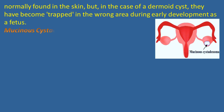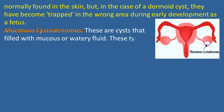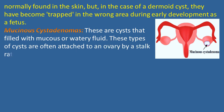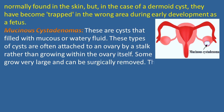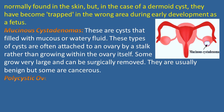Mucinous cystadenomas are cysts that fill with mucus or watery fluid. These types of cysts are often attached to an ovary by a stalk rather than growing within the ovary itself. Some grow very large and can be surgically removed. They are usually benign, but some are cancerous.